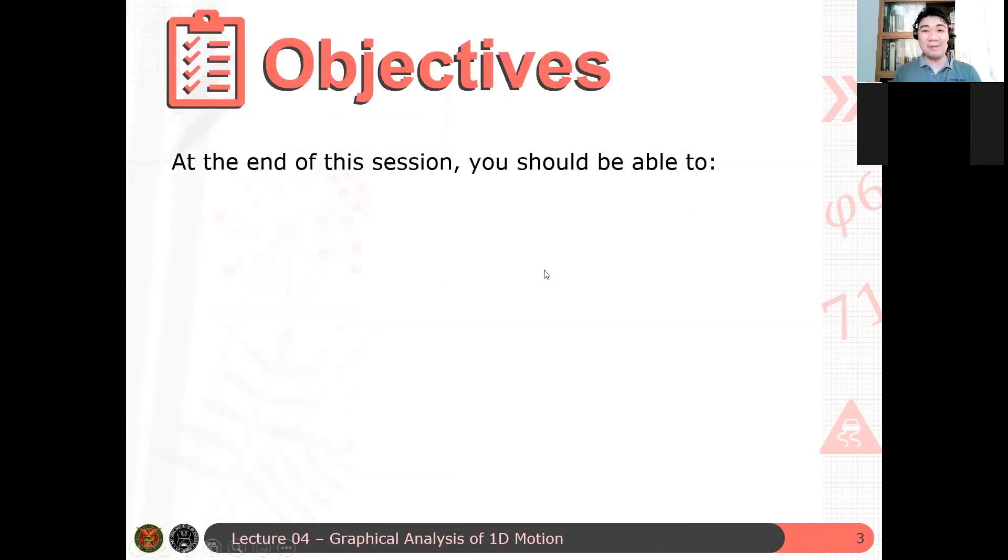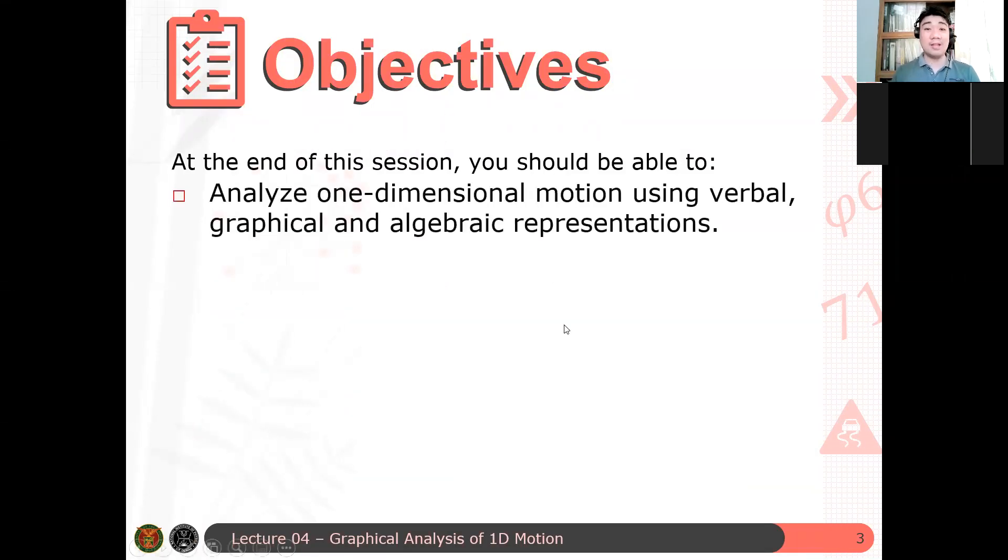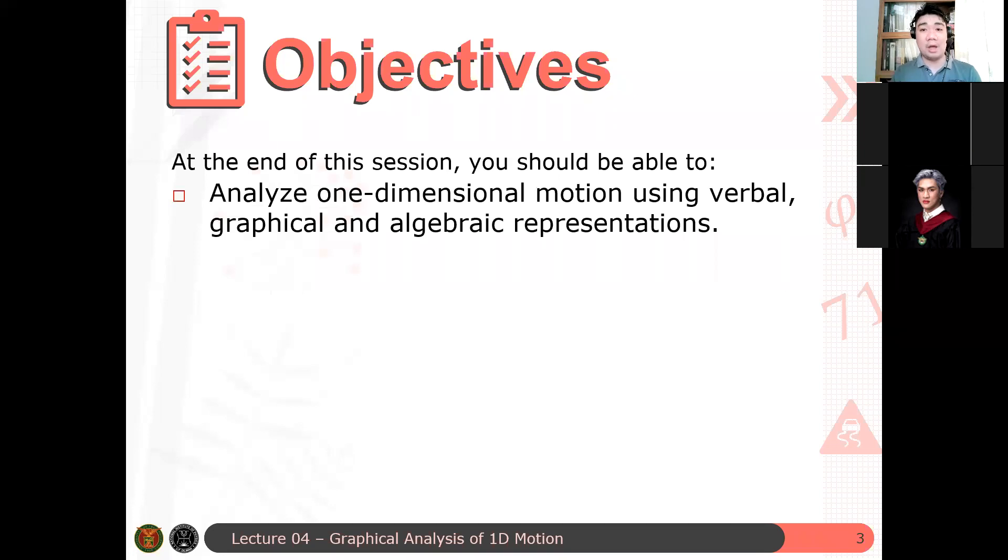So here are the objectives of this discussion. We analyze one-dimensional motion using verbal, graphical, and algebraic representations. From usually one method is we know the position as a function of time of the object and then you graph. But now we do the reverse. Given the position time and the velocity time graph of an object, can you determine, for example, the velocity of an object at a particular instant in time? Or can you determine its acceleration at any given time? That's what we will be doing in this session.